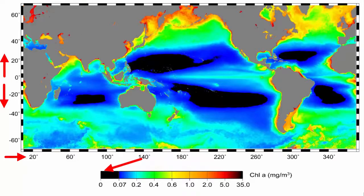What is a milligram per cubic meter? A density, so the density of chlorophyll found in surface ocean water.